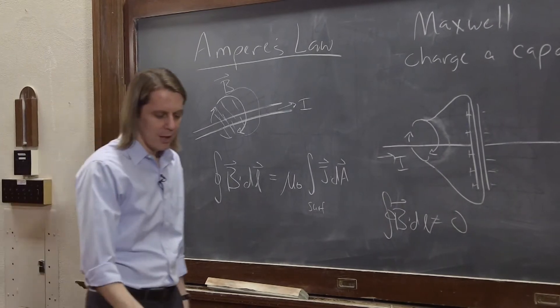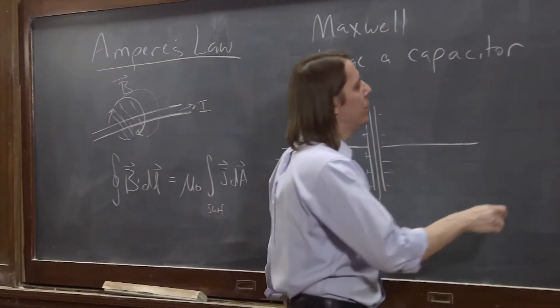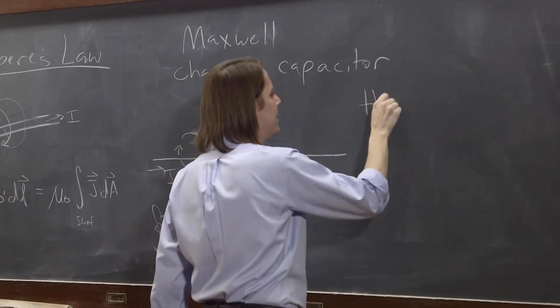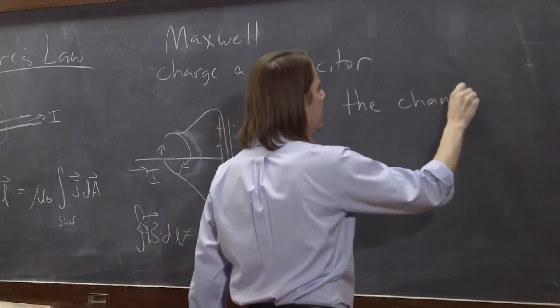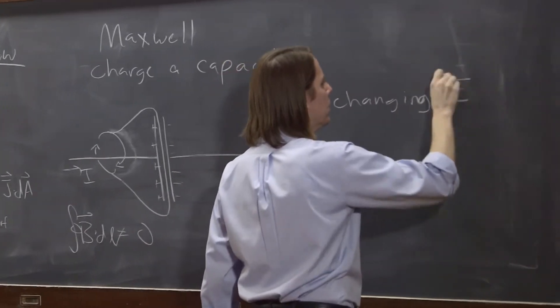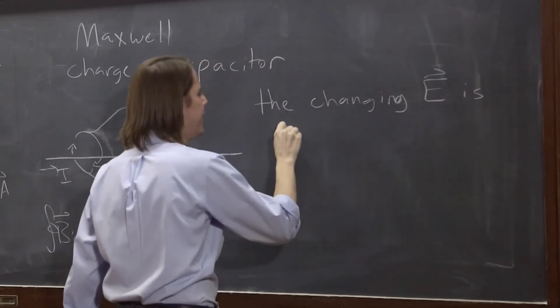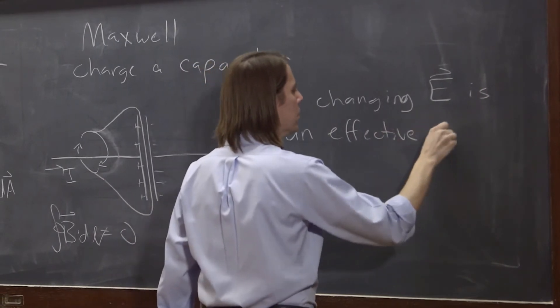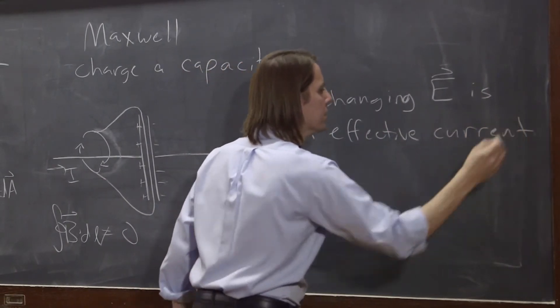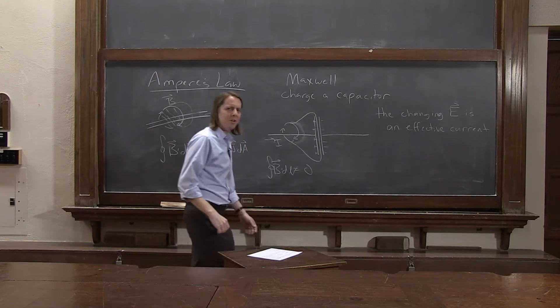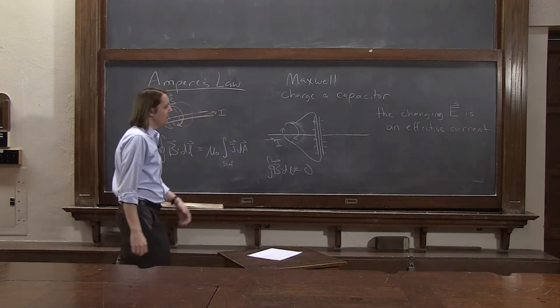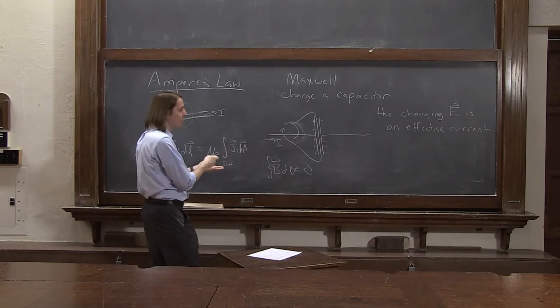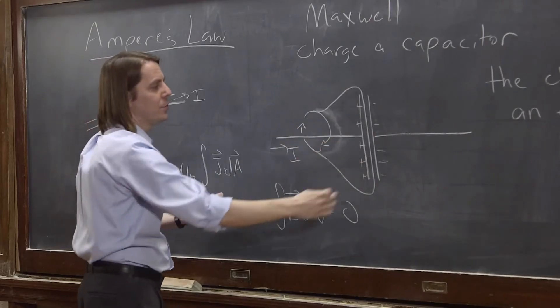So basically, what Maxwell said, I wasn't there, more or less what he said, is that the changing E field is an effective current. Not exactly what he said, but that's what he meant. We need another term over here. We have a current, literal current, charge flowing, but we need another term to account for situations like this.